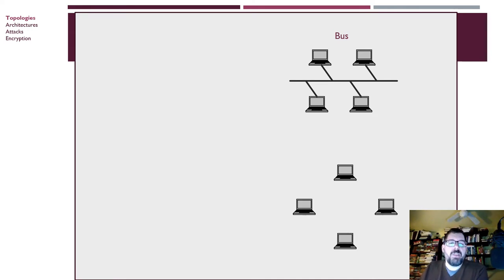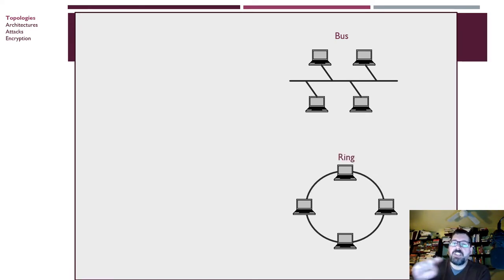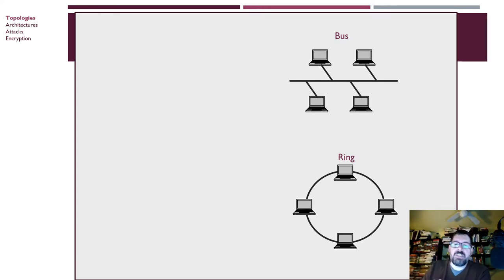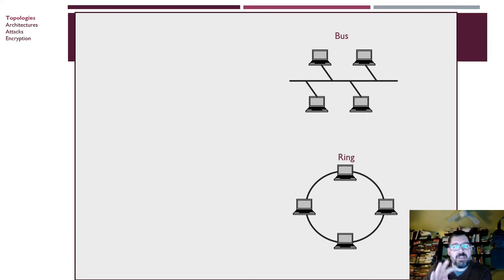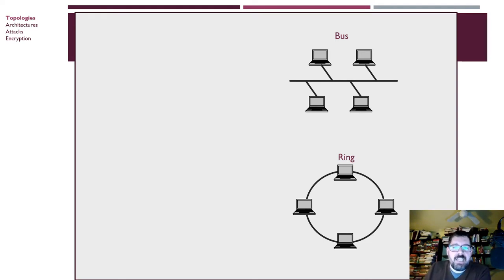Later, some companies came up with a better option — IBM being the most famous with Token Ring, a ring topology network. Each computer was connected to the next, forming a giant ring. If one computer was broken, it still wasn't ideal, but you could still have communication among some of the computers on the network. IBM's Token Ring was a bit more resilient than that basic concept.